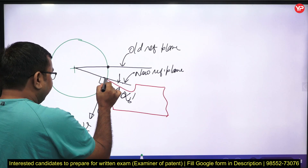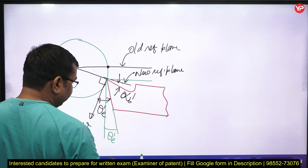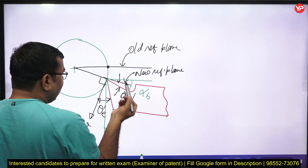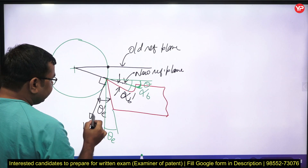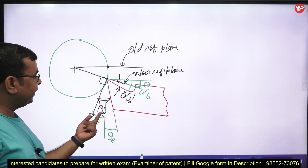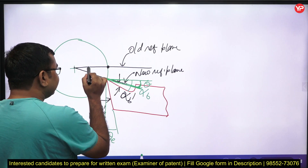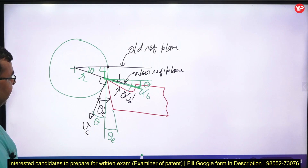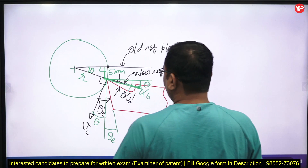If we draw perpendiculars, this angle is the original theta_e and this is the original alpha_b. The angle between the old and new reference planes is theta. If we get theta, we can easily find how much theta_e prime and alpha_b prime will be. Theta is the angle at the center. From the geometry, the radius of the workpiece is 45 mm and the offset is 5 mm.